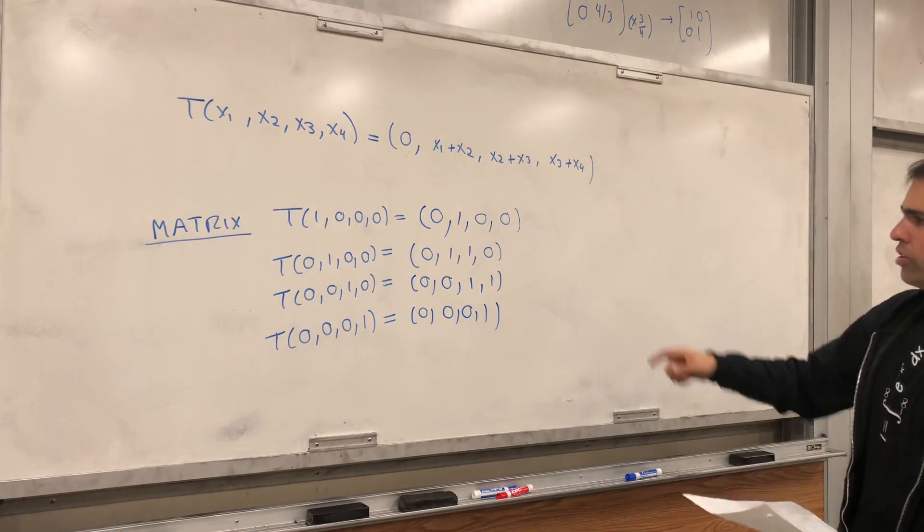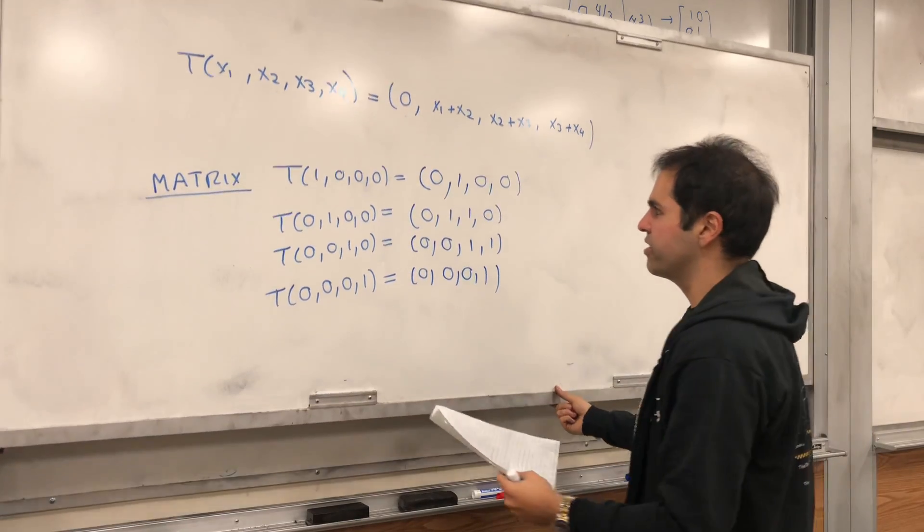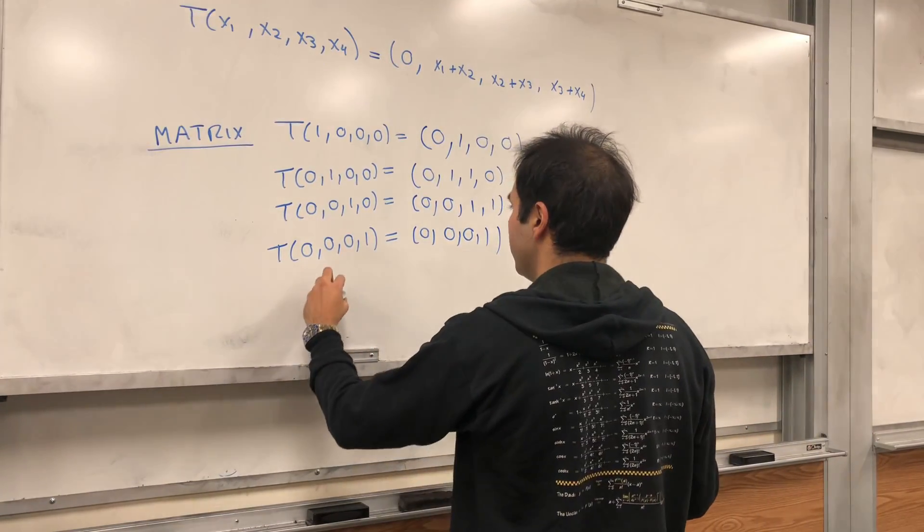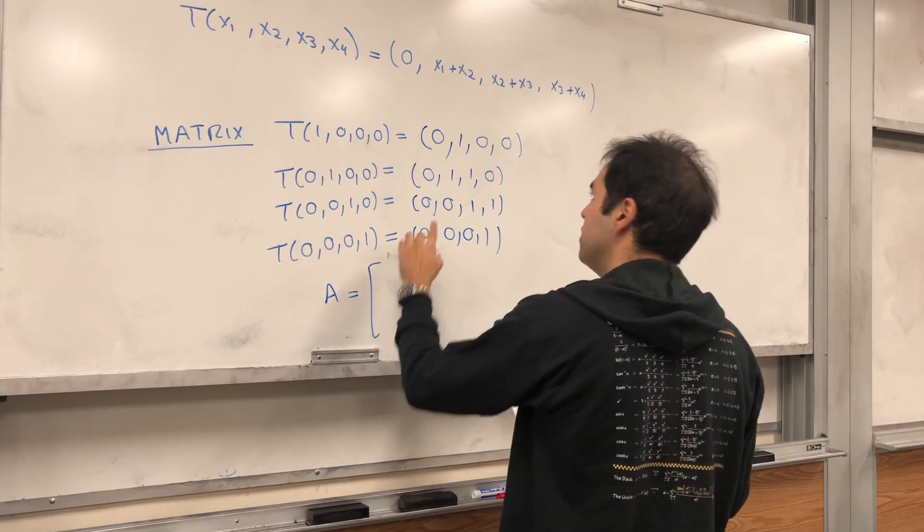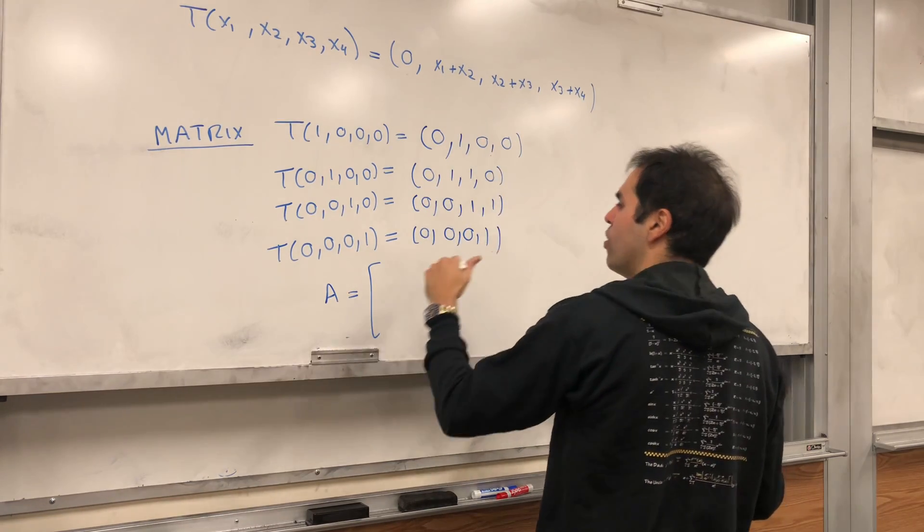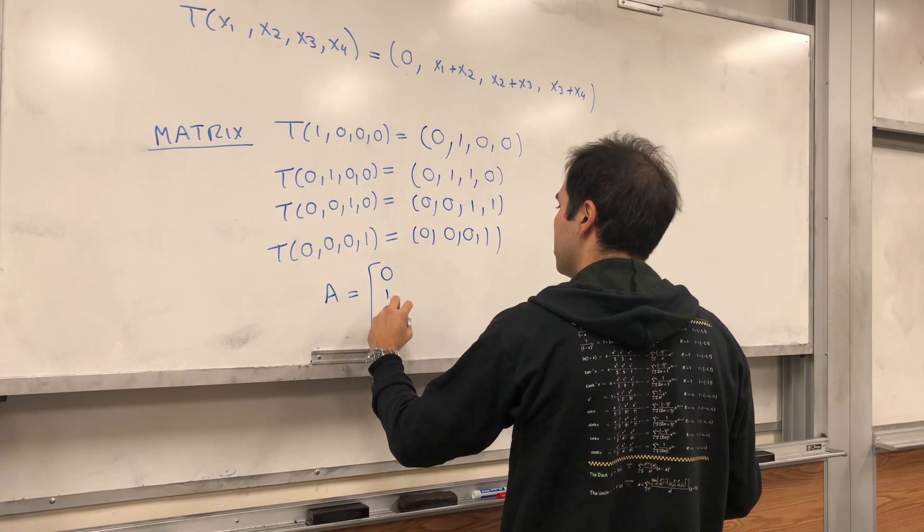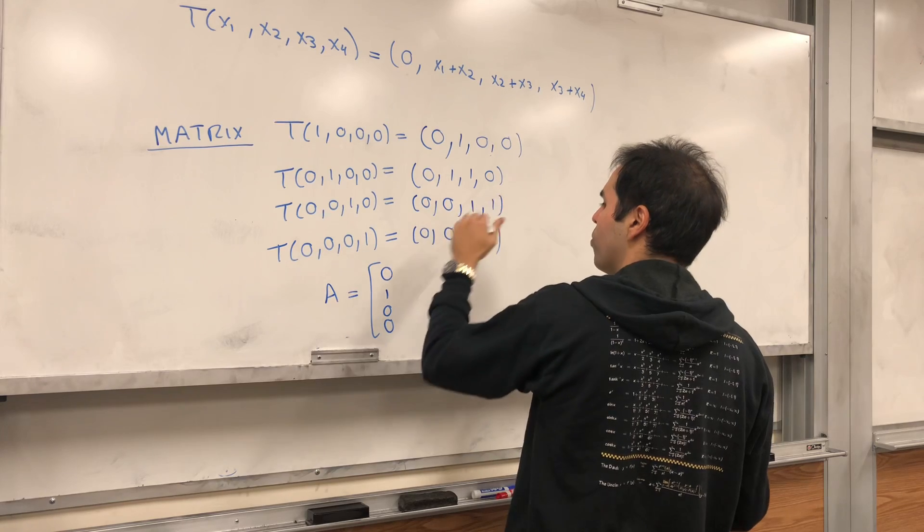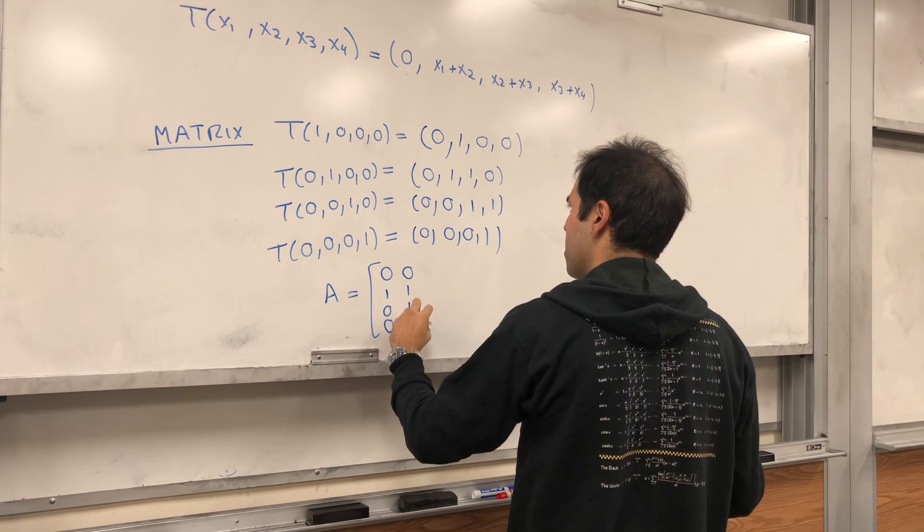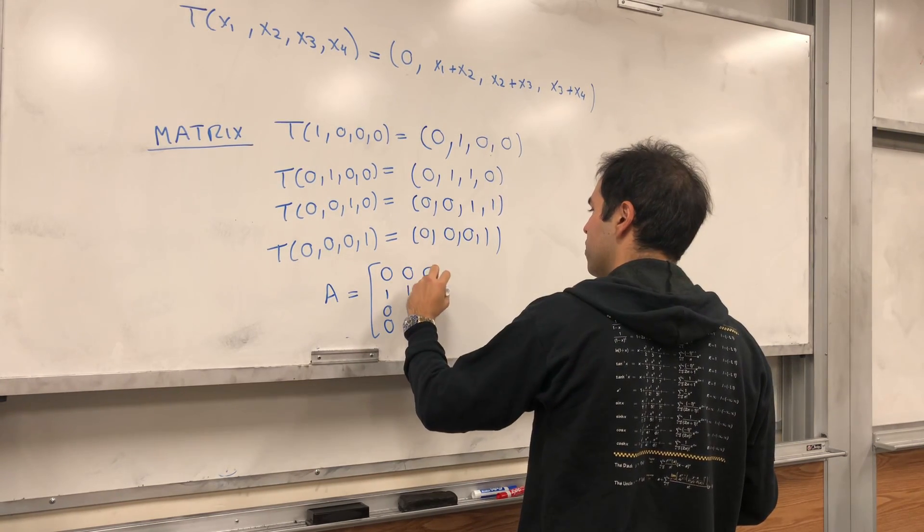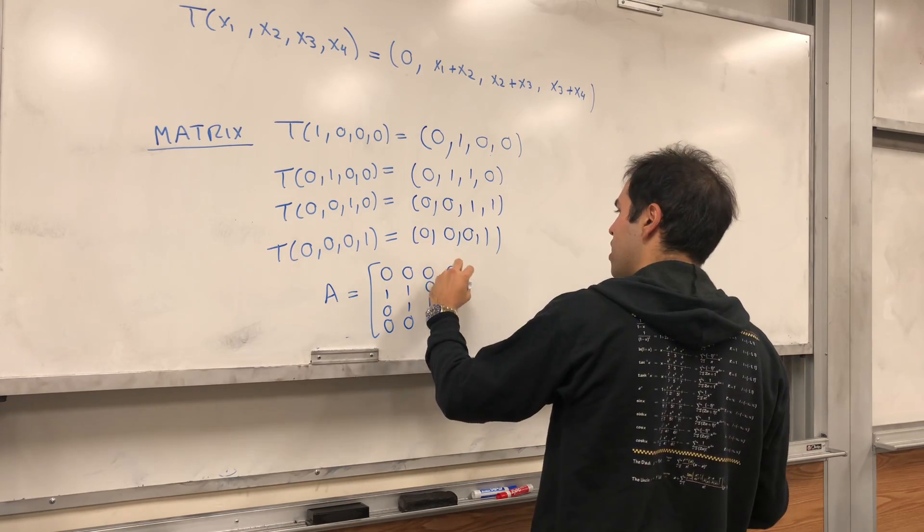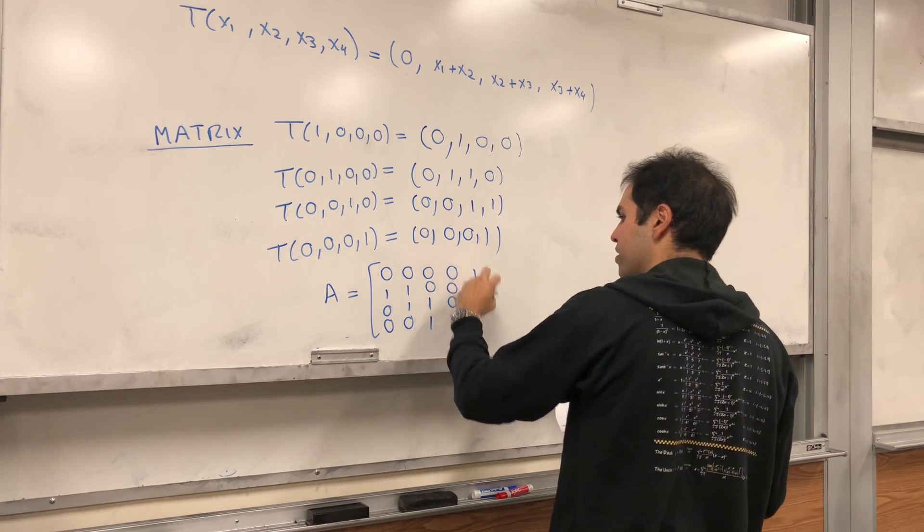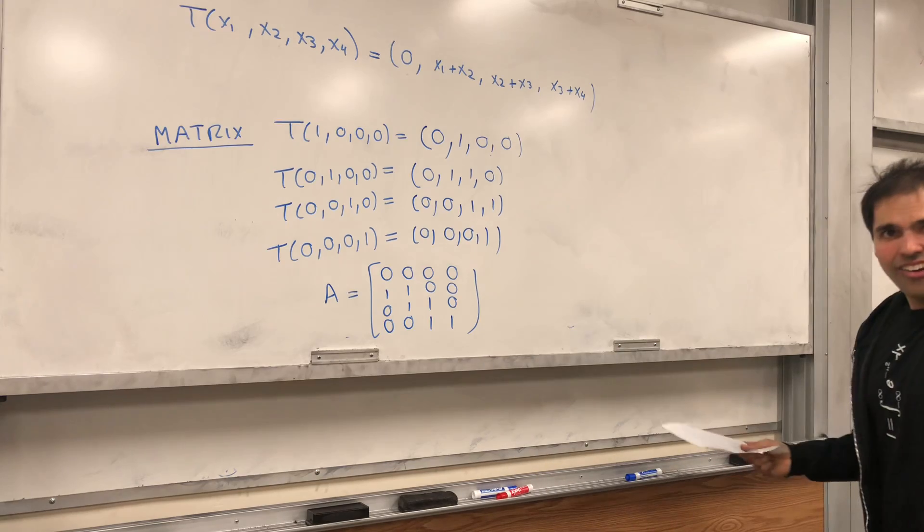And then all you do, you put all of those in a matrix. So the matrix of t will just be, so the first column is 0,1,0, second is 0,0,1,0, third is 0,0,1,1. How cool is that?